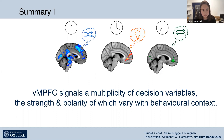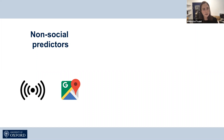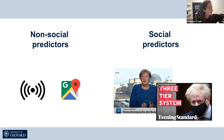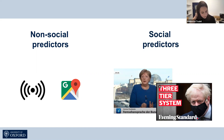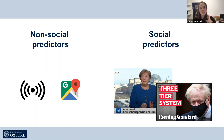Now we've looked at how participants choose between non-social predictors such as a radio program and traffic app. But often we get information from social predictors — we can also call them advisors. For example, consider all the information we received recently about how to behave during a pandemic. When we get information from social advisors, we have to ask ourselves how confident we are in the information provided. In the second part of the talk, we looked at how participants form confidence judgments about social compared to non-social predictors, and whether there is anything unique when forming confidence about information from a social predictor.